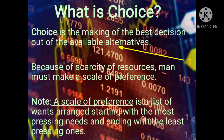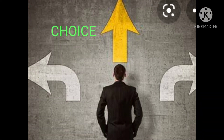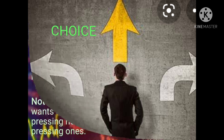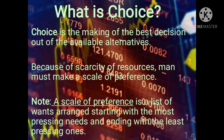What is choice? Choice is the making of the best decision out of the available alternatives. For example, should the guy continue with the yellow arrow, go left, or go right? He has to make a choice — to choose one direction out of the alternatives — because of the limited resources. Because of scarcity, one must make a scale of preference, which is supposed to help in the process of making decisions. A scale of preference is a list of ones arranged starting with the most pressing needs and ending with the least pressing wants.